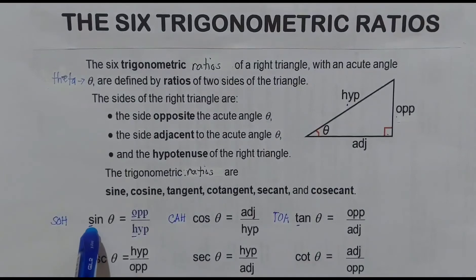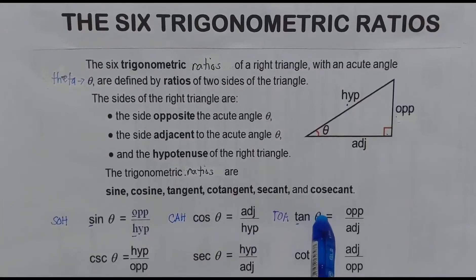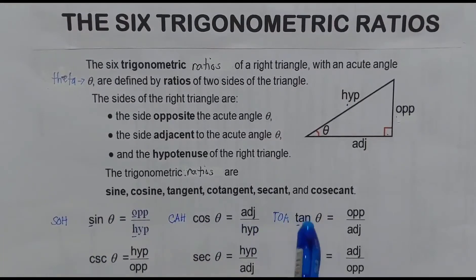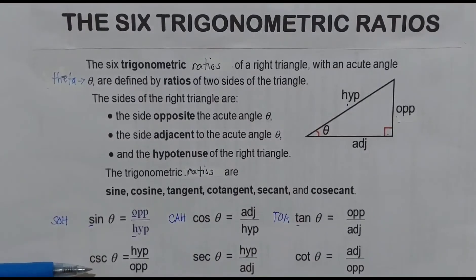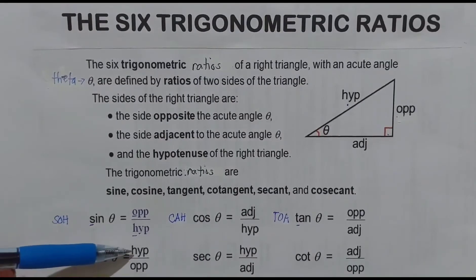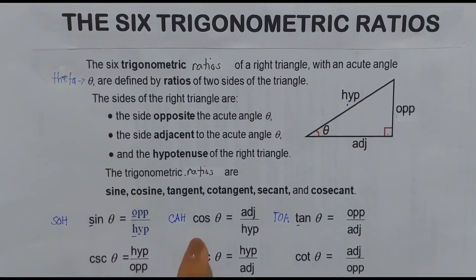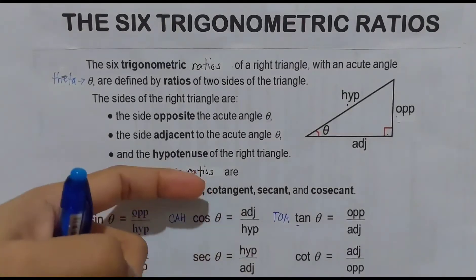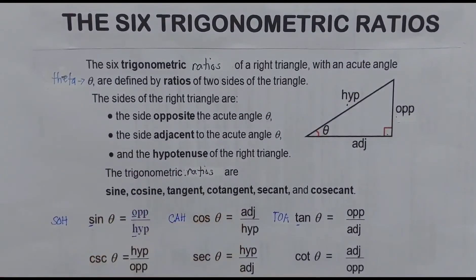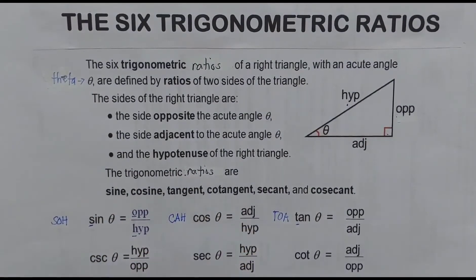So for sine, that is SOH; for cosine theta, that is CAH; and for tangent theta, that is TOA. Since cosecant is the reciprocal of sine theta, cosecant theta is equal to hypotenuse over opposite. And the reciprocal or inverse of cosine theta is secant theta, so secant theta equals hypotenuse over adjacent.